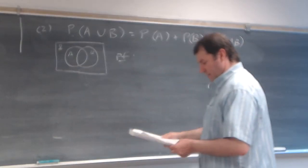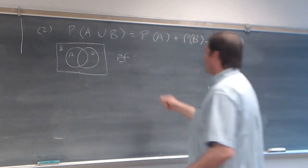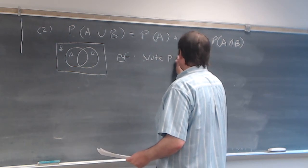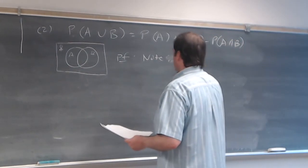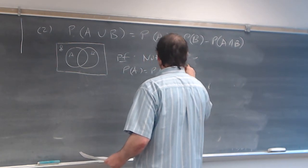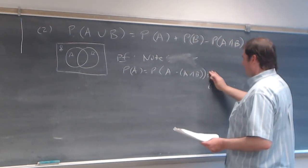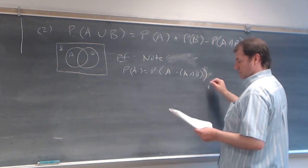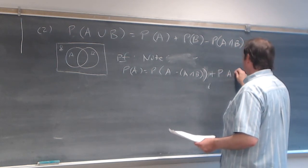What we're asking is: if this box is worth $1, what's the probability or worth of the union of the two circles? The answer should be the probability of A plus the probability of B, but we counted the intersection region twice, so we need to subtract its worth one time. That's where the subtraction comes in. Let's look at the proof. To look at the proof, I'd like to note that P(A) equals P(A minus A∩B) union (A∩B), plus P(A∩B).